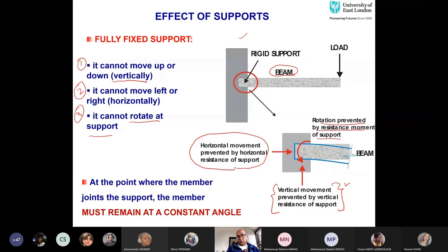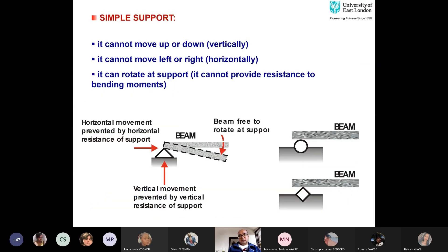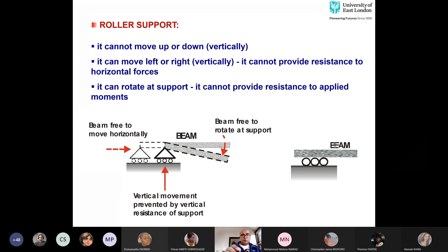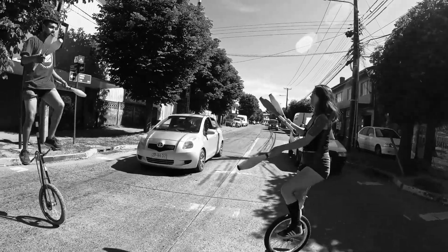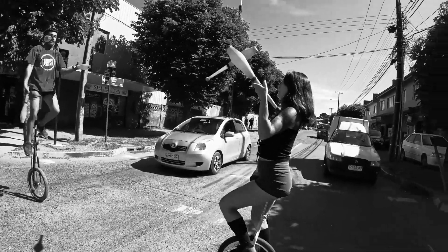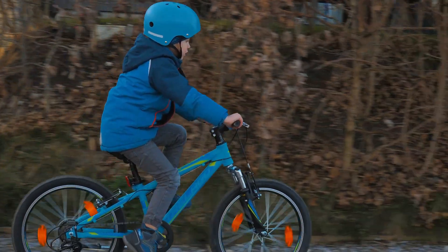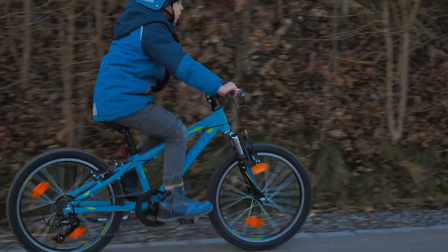On the other hand, if you have a pin support, two reactions are present. It cannot move vertically and it cannot move horizontally, but it can rotate because it does not provide any resistance to bending moment. For a roller support, the beam is free to move horizontally because of the rollers, but it cannot move vertically.